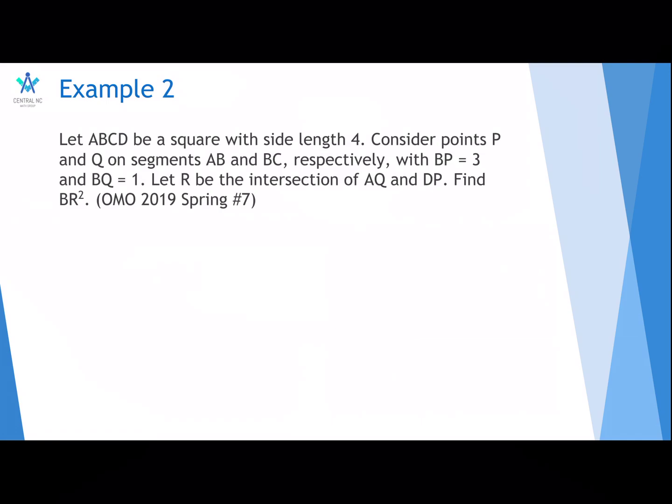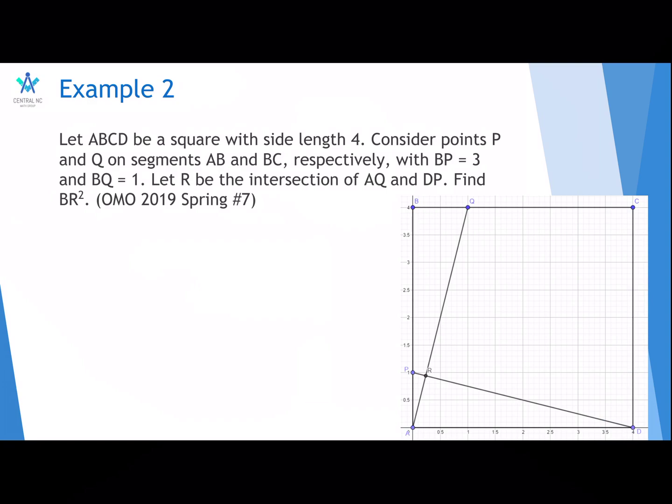Here's a second example. Let ABCD be a square with side length 4. Consider points P and Q on segments AB and BC respectively, with BP equals 3 and BQ equals 1. Let R be the intersection of AQ and DP. Find BR squared. This is from the OMO online math open 2019 spring, the seventh problem. Here's a diagram.